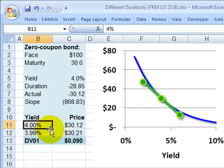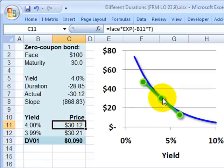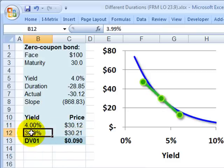So just to illustrate, at the yield of 4%, this bond is priced at $30.12. Again, 4% yield intersects that blue line, which is the price at right about here, $30.12.